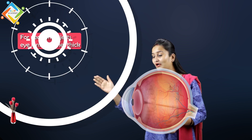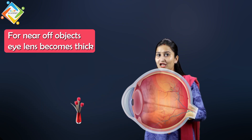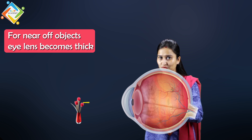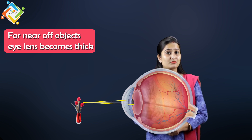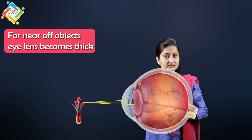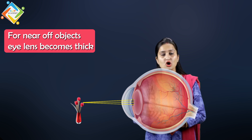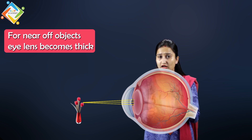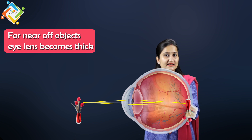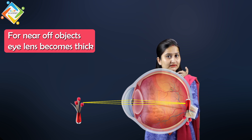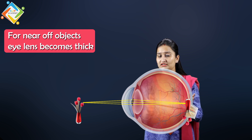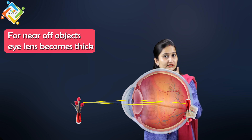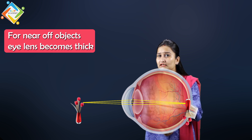Similarly, if some object is kept very close to the human eye, the ciliary muscles contract. When the ciliary muscles contract, they press on the lens, causing the lens to bulge and become more thick. Because of the thicker lens, the focal length reduces. That is why you can clearly see objects placed near to the human eye.